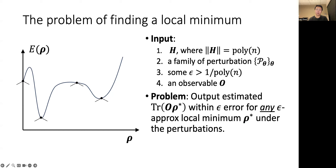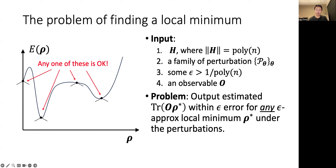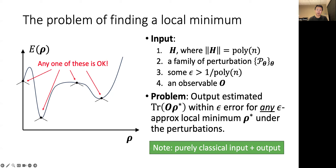I will define the problem of finding a local minimum in a quantum system, which is specified by four inputs. The first is the Hamiltonian H of the system, which we assume to have an energy that scales at most as a polynomial function of the system size n. We also need to specify a family of perturbations, which sets the energy landscape. Next, we need a precision parameter epsilon, which we assume to be inverse polynomially large. And finally, we need an observable O, which is used to characterize the local minimum state. The task is to output an estimate of the expectation of the observable O within epsilon error for any epsilon approximate local minimum under the perturbations. I will stress that this is not a decision problem, because there might be multiple acceptable outputs corresponding to different local minima in a system. Note that this is a problem with purely classical input and output, so that classical computers can also attempt to tackle it.